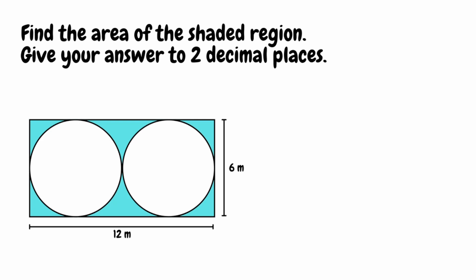For this final question we want to figure out the area of the shaded region again, but this time we're going to give our answer to two decimal places. We've got a rectangle with two circles on the inside. Initially it looks like we've only got the dimensions for the rectangle, but if we look closer we can use those dimensions to show that these circles are identical. Because the height of the rectangle is 6 metres, and the circles touch from top to bottom, we know the diameter of both circles is 6 metres.